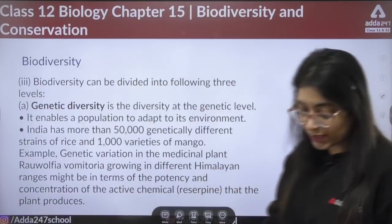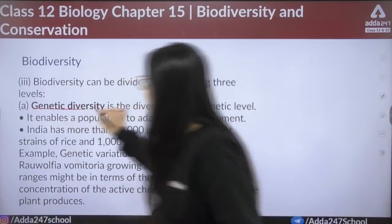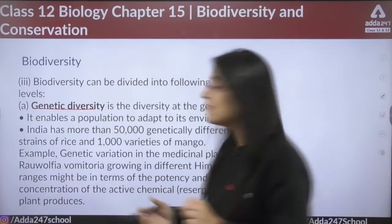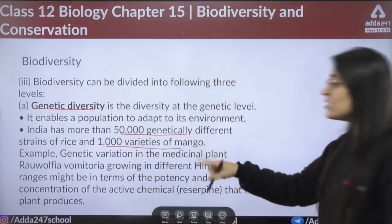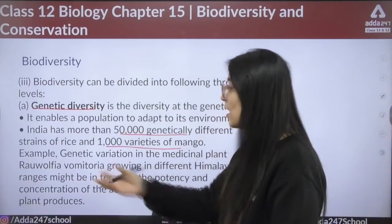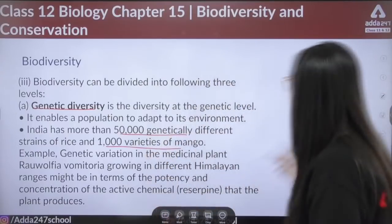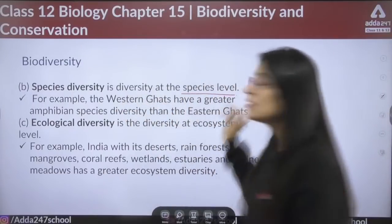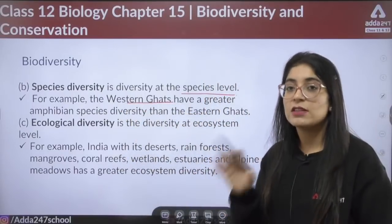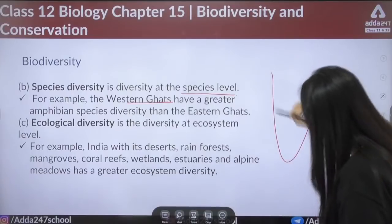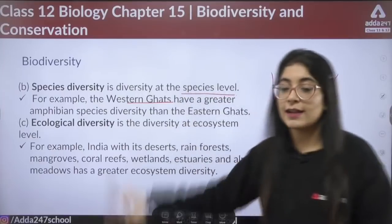Biodiversity can be divided into the following levels. First is genetic diversity — diversity at the genetic level. There are more than 50,000 genetically different strains of rice and 1,000 varieties of mango. For example, genetic variation in the medicinal plant Rauwolfia vomitoria growing in different Himalayan regions may differ in potency or concentration of active molecules.